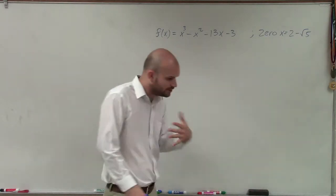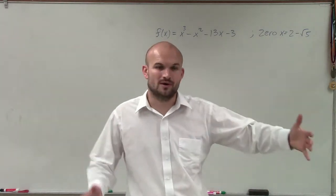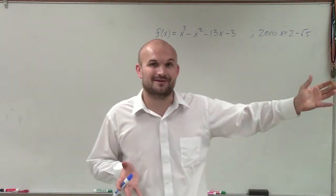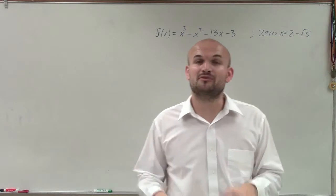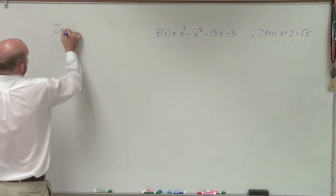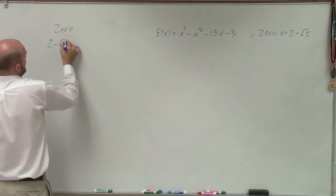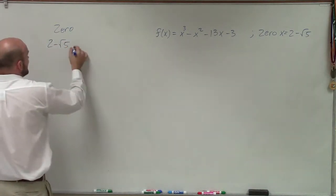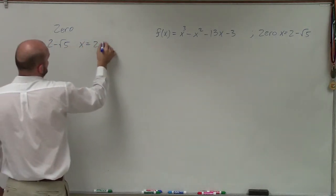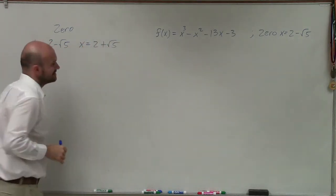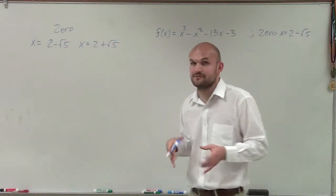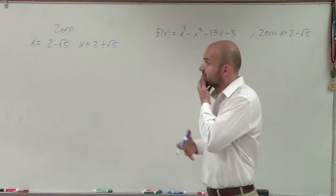So now when looking at a problem like this, when I have a zero — and especially one that's going to include an irrational number, the square root providing an irrational number — I know that I'm going to have to provide the complex conjugate. So I know that if 2 - √5 is a zero, then I also know that x = 2 + √5 is a zero. Because remember, that's part of those conjugates — if you have one as a zero, the other one's going to be a zero.